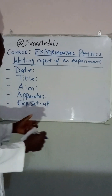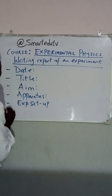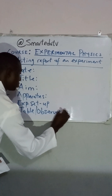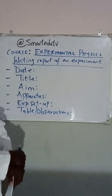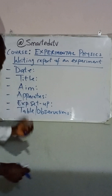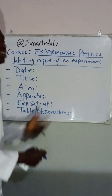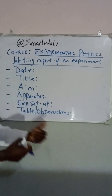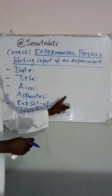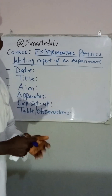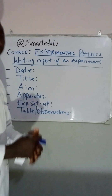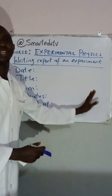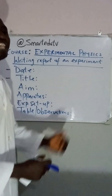The next thing after writing the experimental setup is to include what we call the table, or observations. This is very important in writing the report of an experiment. The table or observations are those results that were gotten while in the laboratory. It should be noted that in writing a table, all the parameters must be in the same decimal places. If we are using three decimal places, then all entries must be in three decimal places. If we are using four decimal places, then all entries must be in four decimal places. There must be uniformity.